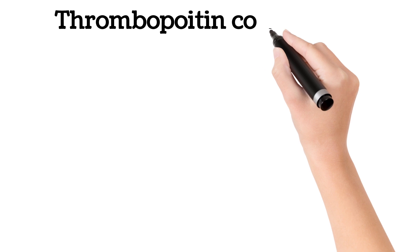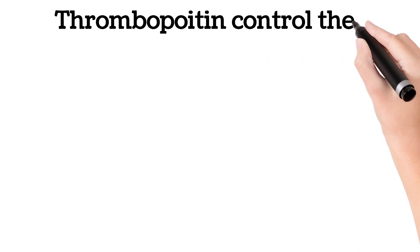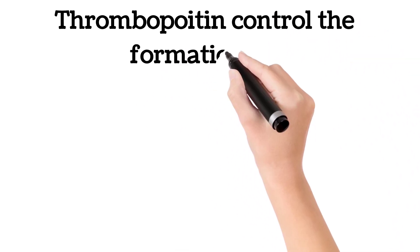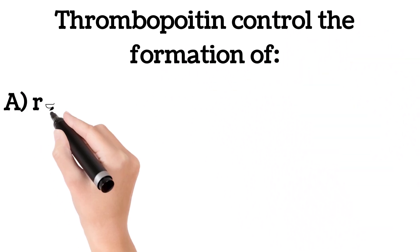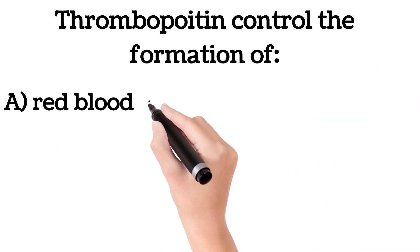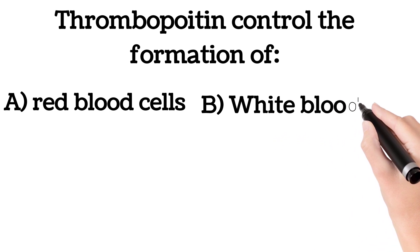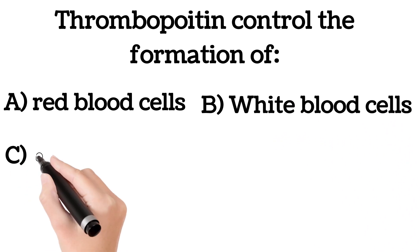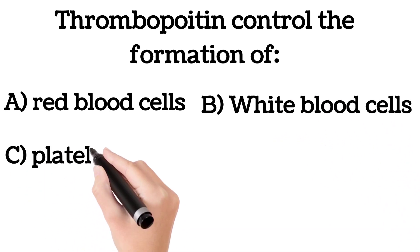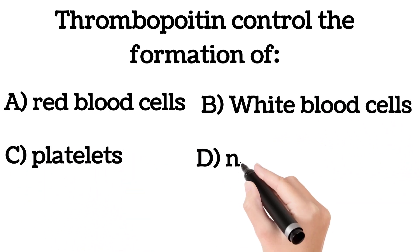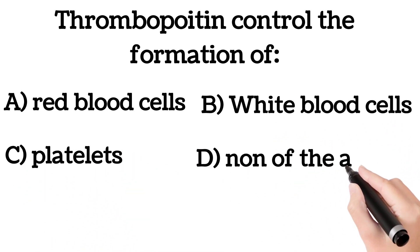Thrombopoietin controls the formation of: A. Red blood cells, B. White blood cells, C. Platelets, D. None of the above.